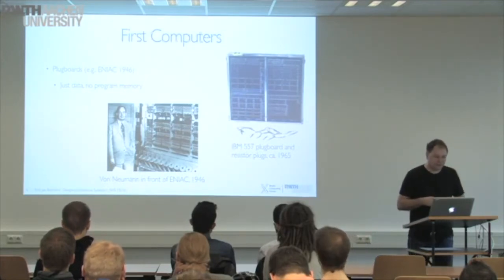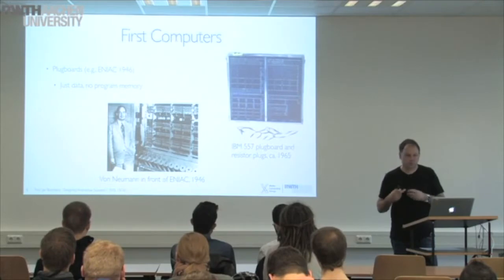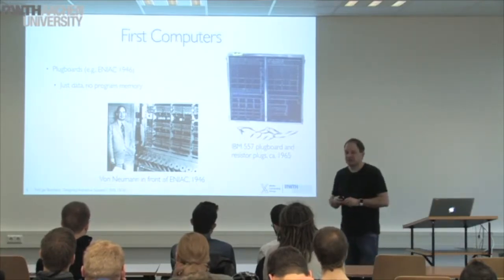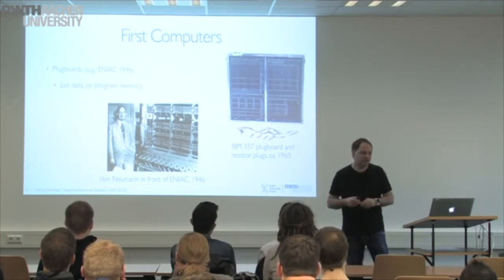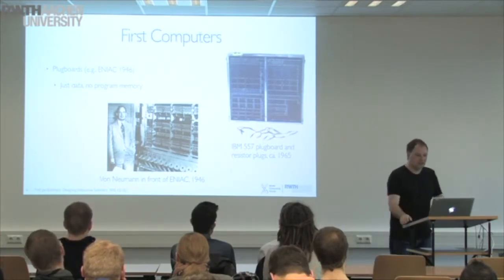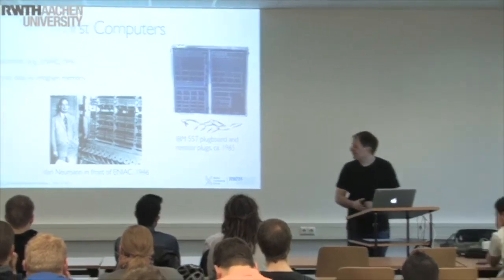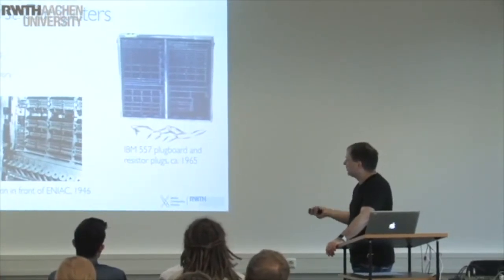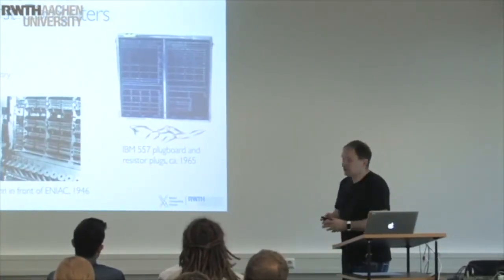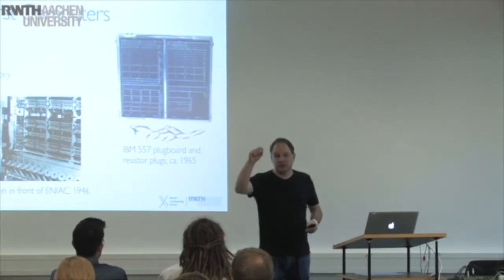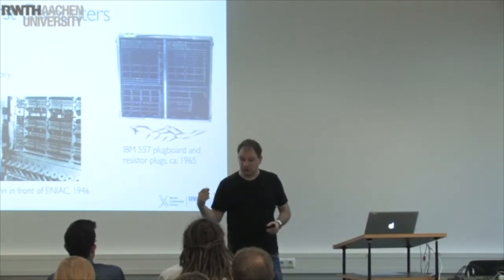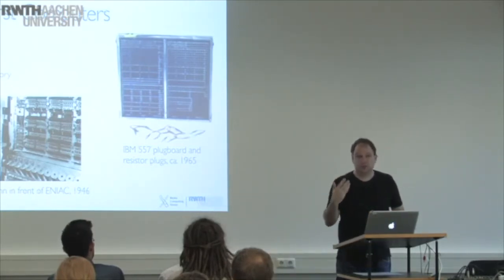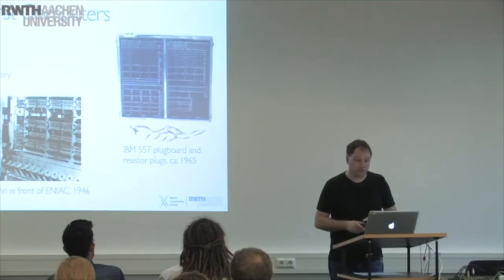A very early example of how computers would work is that they actually didn't have program memory in the sense that you would store the program digitally in some kind of memory array. What you would do instead is have plug boards. A very late model from 1965 would allow you to hardwire, literally, the way that your program was going to work — so your programming was done by plugging in cables. You would feed in the data and it would process the data according to the hardwired program you had created.